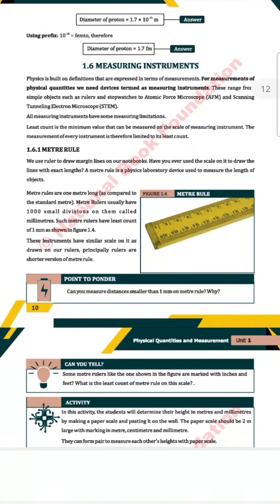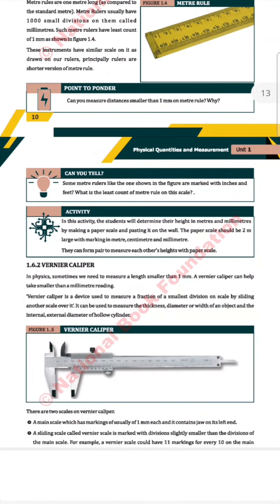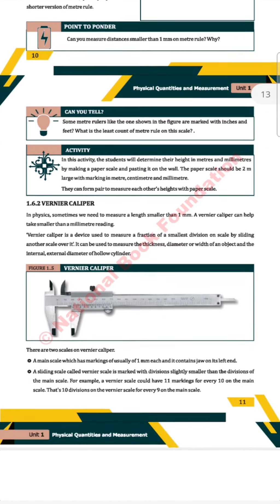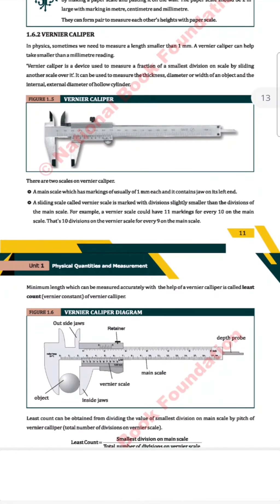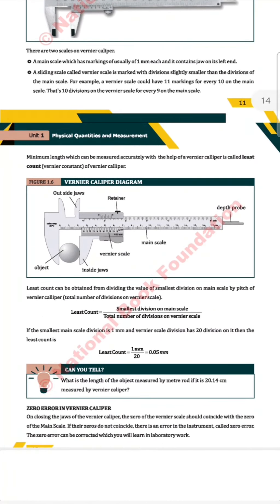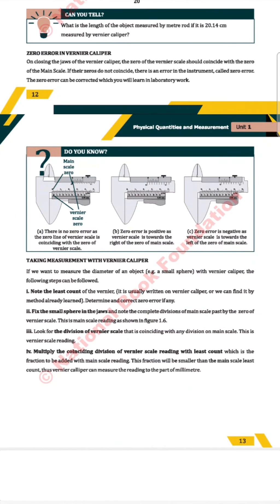For measuring instruments, the first one is the meter rule, with an original picture given. A 'Point to Ponder' short question is also included. A 'Can You Tell' question is given as a small exercise inside the unit, followed by an activity related to the meter rule. Then comes vernier calipers, for which both an original picture and a labeled diagram are provided. All details are given, including an exercise on zero error in vernier calipers, shown clearly with the help of diagrams.